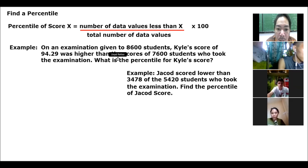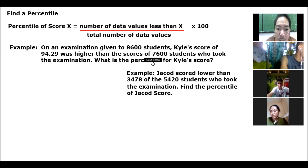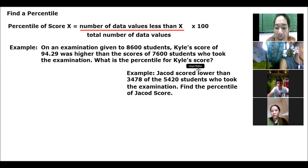Example number one: on an examination given to 8,600 students, Kyle's score of 94.29 was higher than the score of 7,600 students who took the examination.